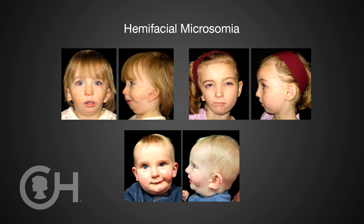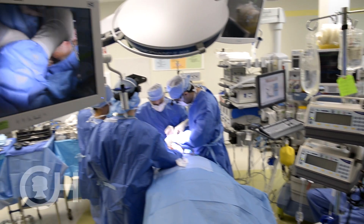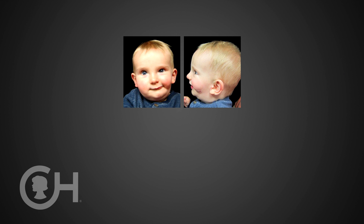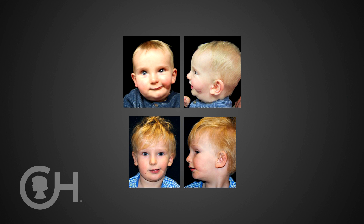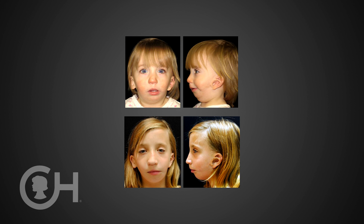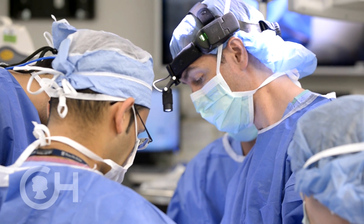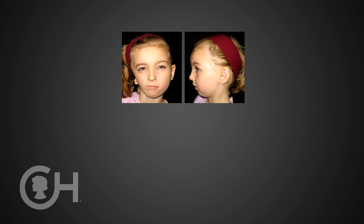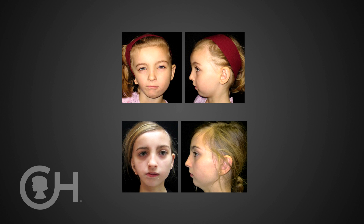Hemifacial microsomia is typically diagnosed at birth. The treatment depends on the degree of the difference as well as the age of the child. In children with less severe deformities, it's frequently a matter of taking the existing bone structure and cutting it, shifting it, or elongating it — or doing a procedure called distraction where we cut the bone, pull it apart, and create new bone. We also do things to the soft tissue like adding fat grafts and fat transfers, all to normalize appearance and improve facial symmetry.